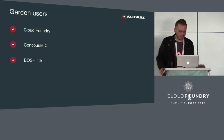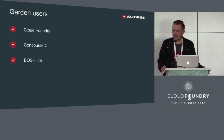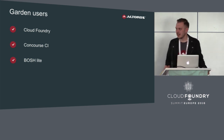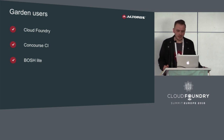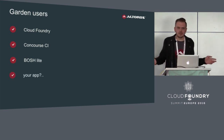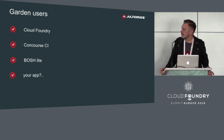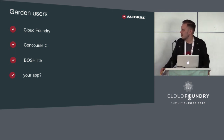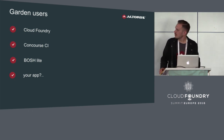Also, Bosh Lite — which is Bosh deployed in a single VM. It uses Garden containers as infrastructure to create jobs. Instead of creating VMs, it creates jobs inside Garden containers. You can also use Garden in your own project — it's not that hard. I tried to compile and run Garden and it took me about half an hour. If it fits your needs, give it a try.